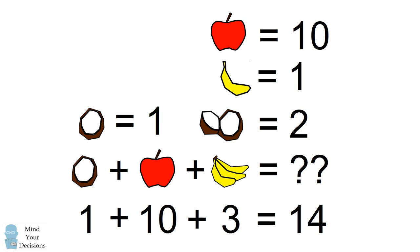You could interpret the pictures to be slightly different. You could say the coconut might be, say, 3 fourths of a coconut, in which case you get a slightly different answer. But 14 is what many people consider to be the correct answer.